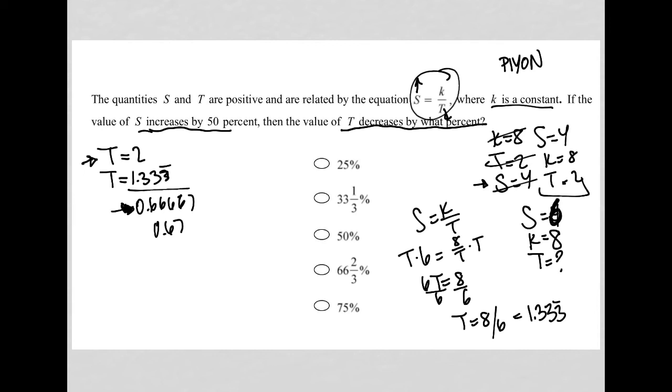So 0.67 is what percentage of 2? Is 0.67 25% of 2? No, it's not. Is 0.67 33 and a third percent of 2? Yes, it is, right? And I'll show you the math in a second.